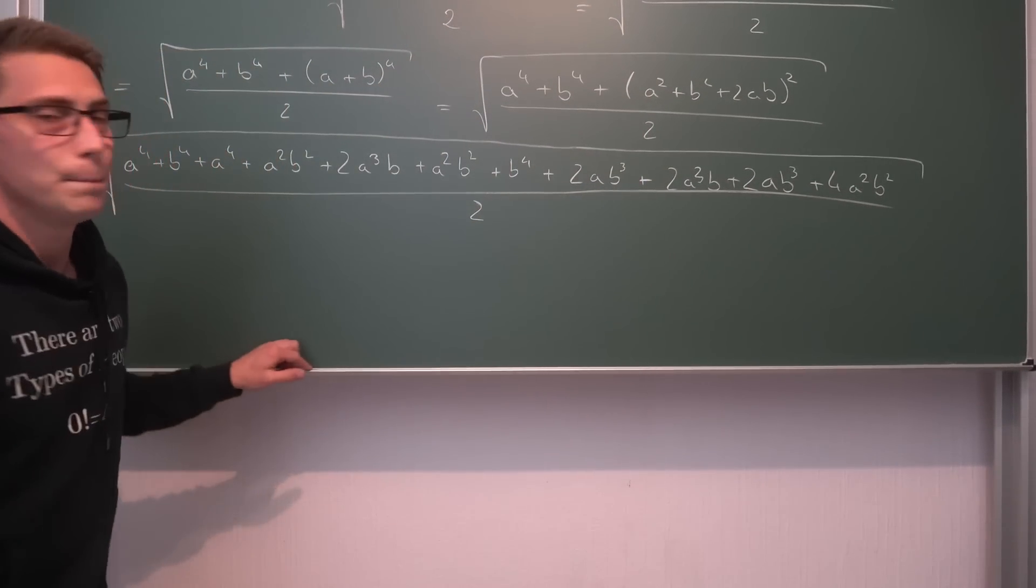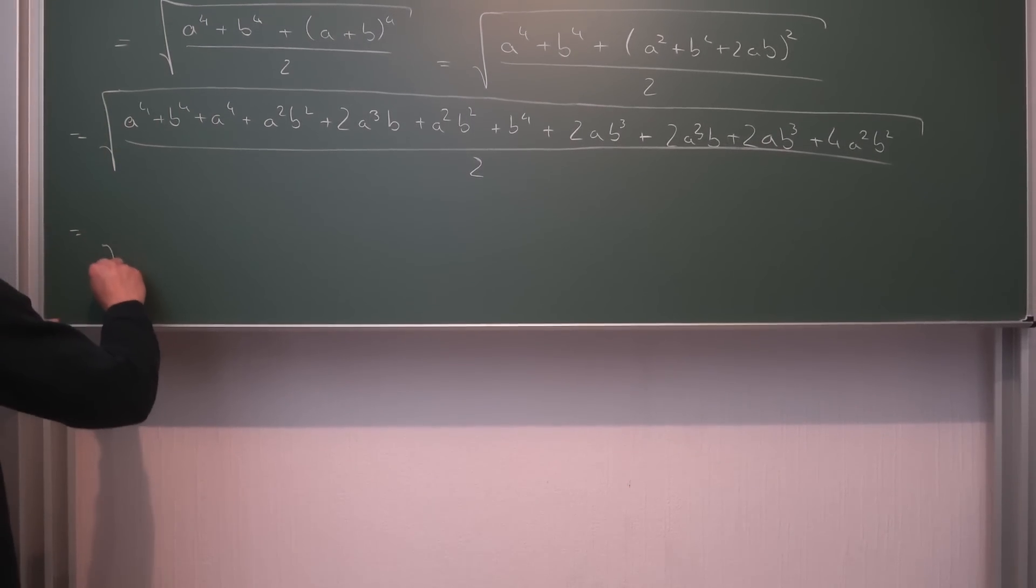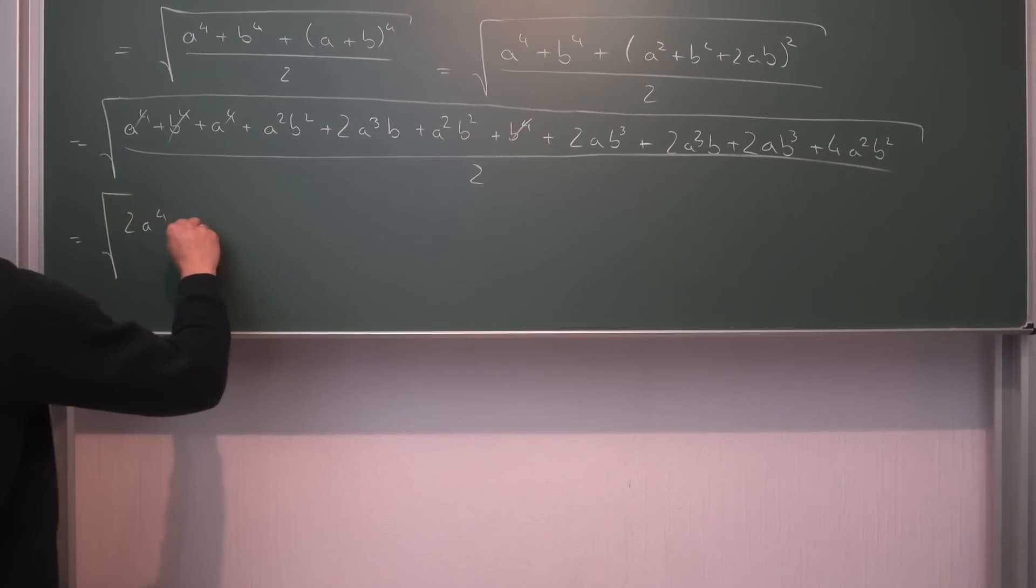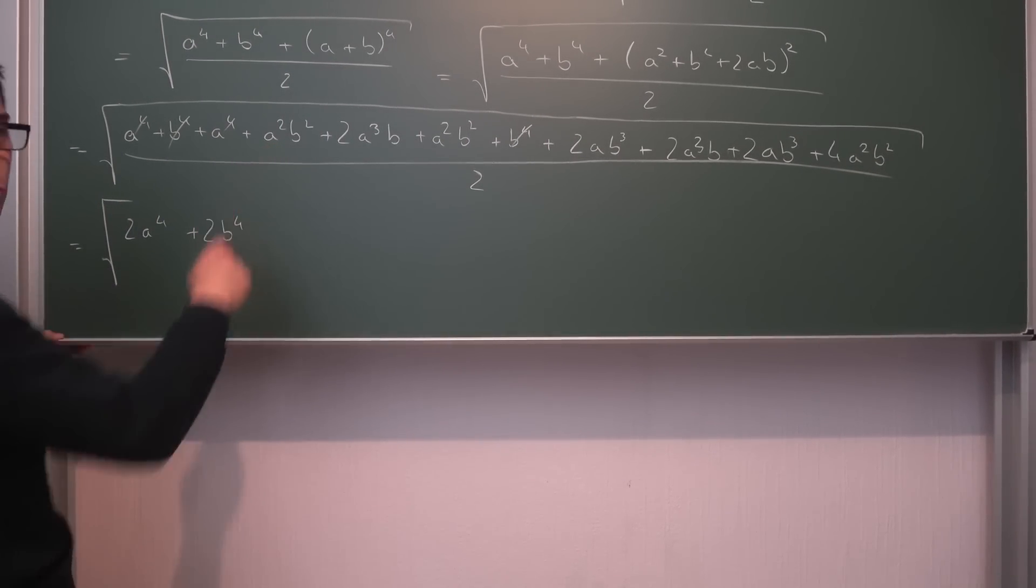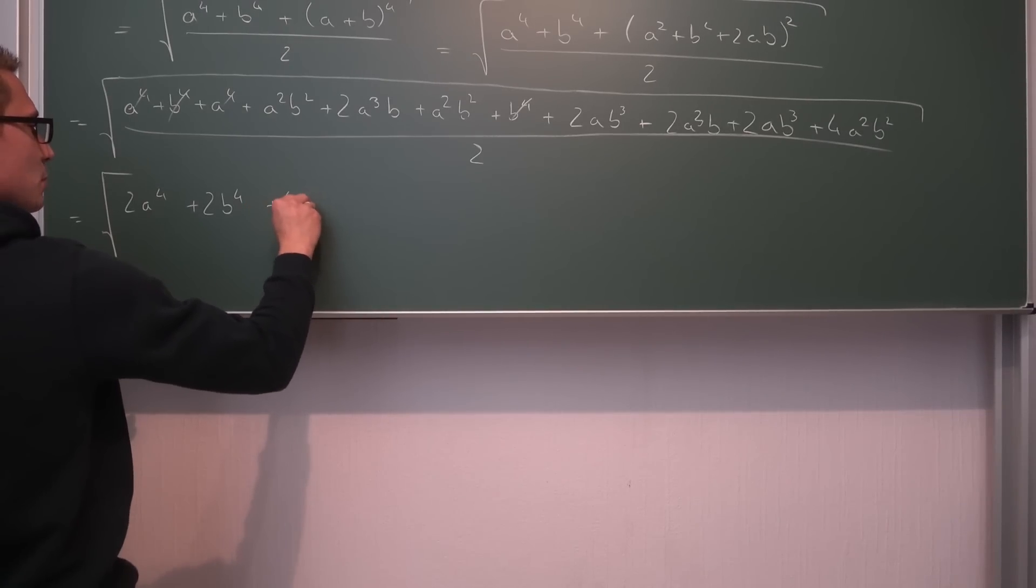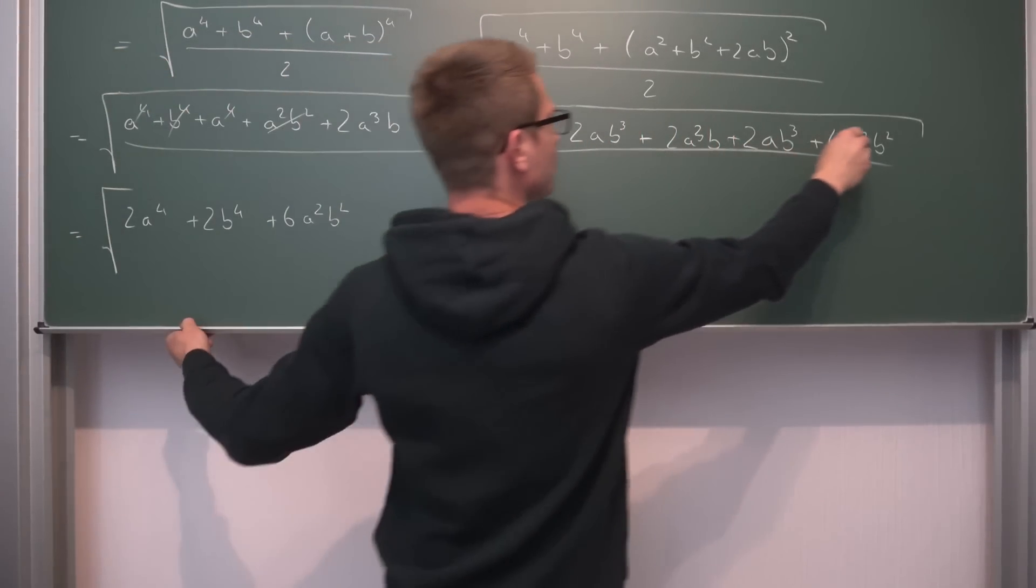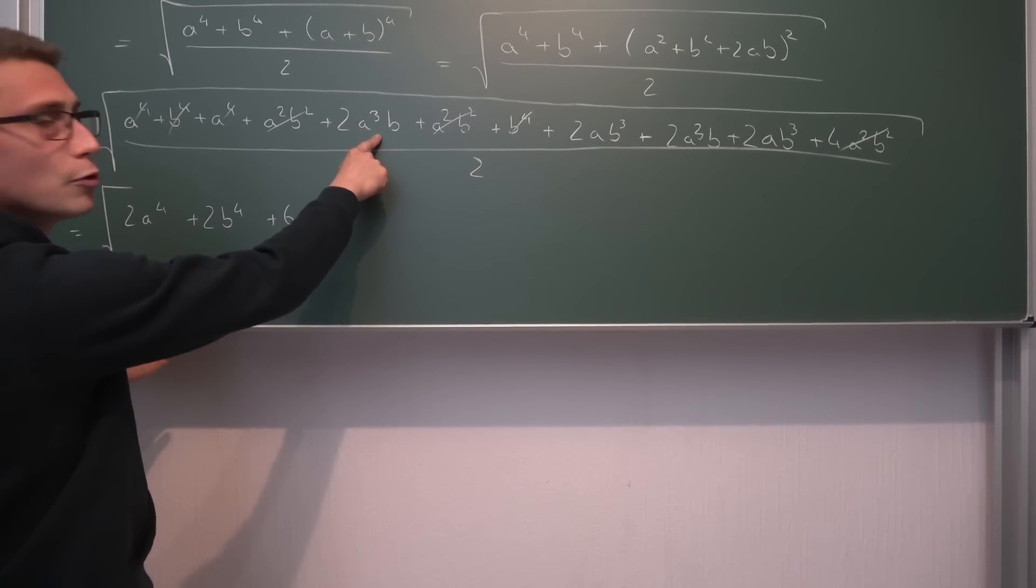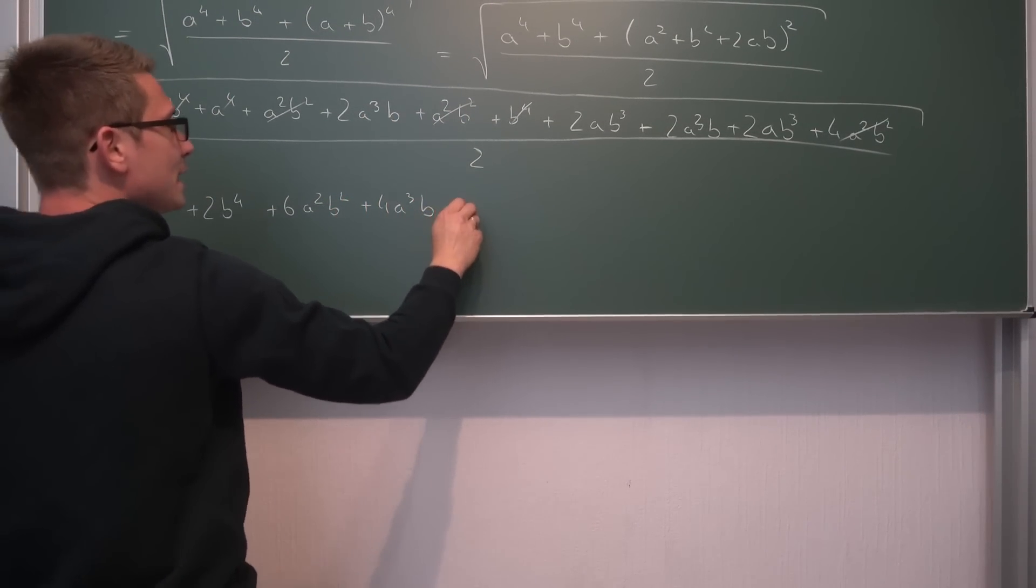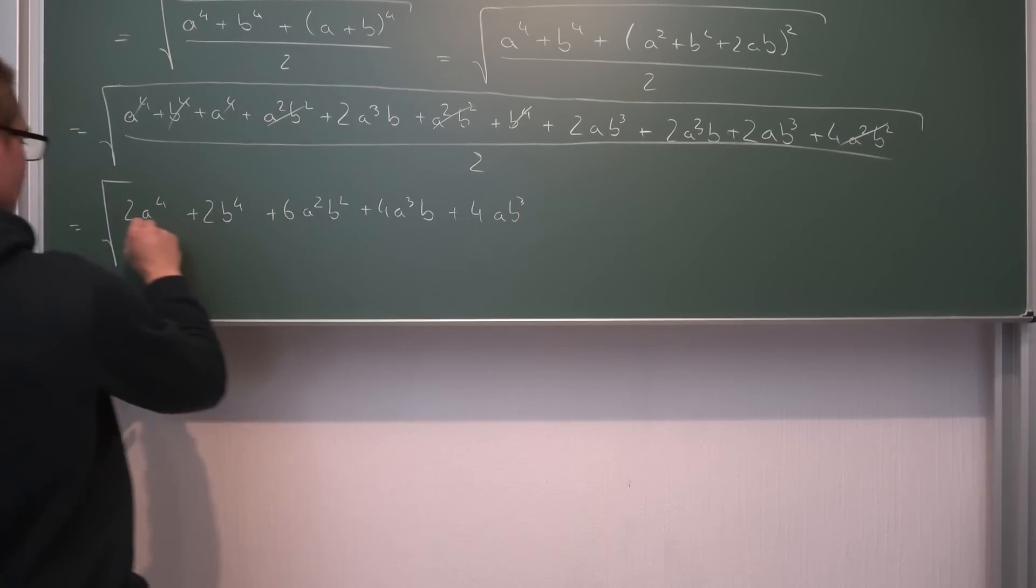And now here comes the big first condition. Namely is the numerator divisible by 2. We are going to see. Let's bring all the parts together. We are going to get the square root of a to the 4th power plus a to the 4th power is 2 times a to the 4th power. Same thing with the b to the 4th power plus 2 times b to the 4th power. Now next up we are going to get a squared b squared. Namely 1 times 2 times and overall 6 times. So plus 6 times a squared b squared. Let's cross everything that we have used thus far. Namely those. And next up we are going to get 4 times a to the 3rd power times b. By putting those two terms together. So plus 4 times a to the 3rd power times b. And the same thing analogously with the b to the 3rd power instead of a to the 3rd power. Yeah. And all of this divided by 2.